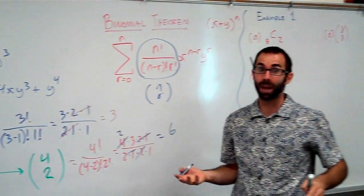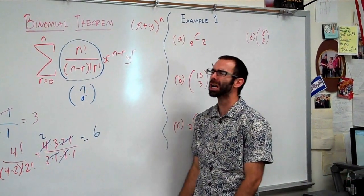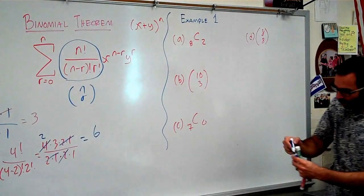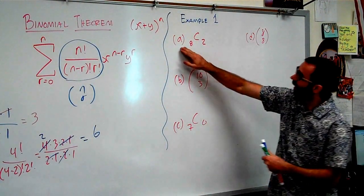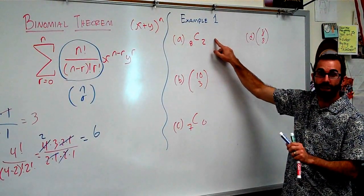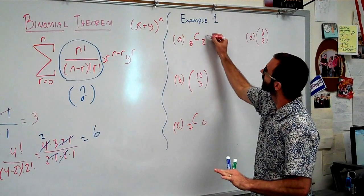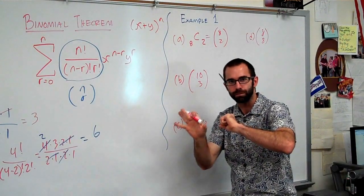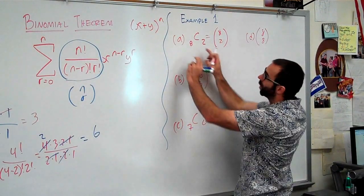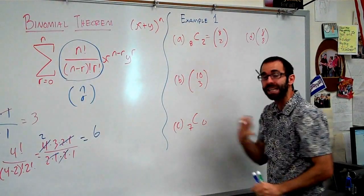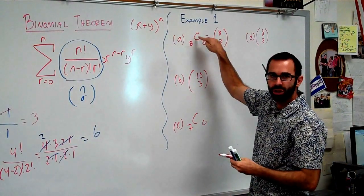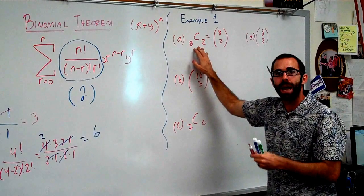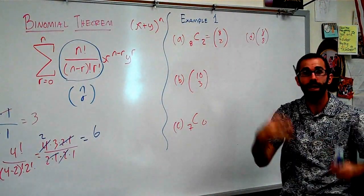All I taught you right now is just how do you get n choose r - how do you get the coefficients? I haven't talked about how do you get all these other parts. Let's actually now do example number one. This right here is a different notation than what you're used to. This is the same thing as saying 8 choose 2. This C right here really means combination, but we can also replace it with choose. As an IB student, they won't use this notation - IB will use the other form. It's still mathematically correct to write it this way, and our textbook will write it both ways.